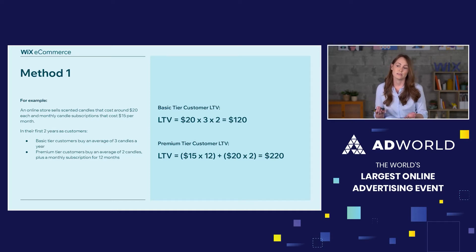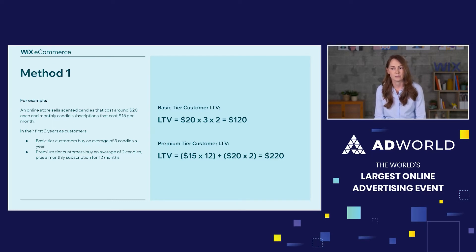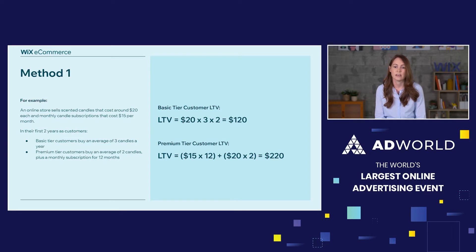We'd calculate lifetime value for each customer segment individually. The basic tier is straightforward: $20 multiplied by three candles, multiplied by two years, giving us $120. For the premium tier, we'd say $15 of subscriptions multiplied by 12 months, plus $20 multiplied by two candles, giving us a total of $120. So two customer segments with two customer lifetime values.